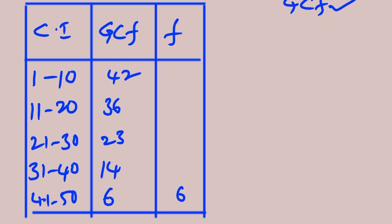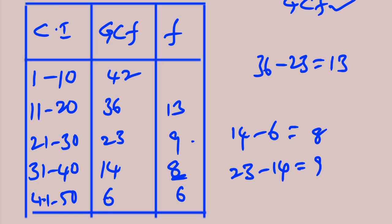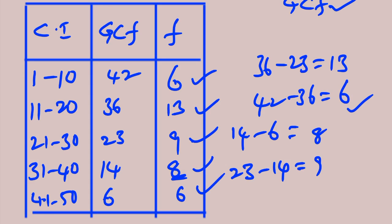To find frequencies from GCF, move from the bottom downwards. Write the last value (6) directly as the first frequency from the bottom. Then subtract successive GCF values: 14 − 6 = 8, 23 − 14 = 9, 36 − 23 = 13, 42 − 36 = 6. So these are the frequencies. If we know the greater than cumulative frequencies, we can find the original frequencies by subtracting consecutive values from the bottom.